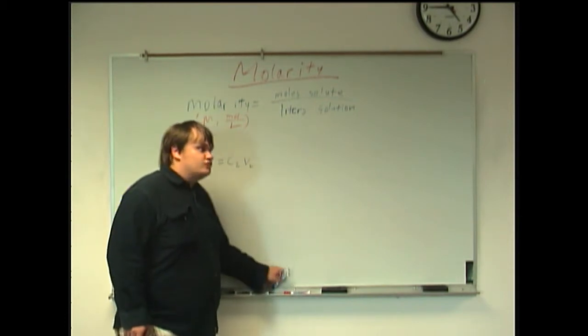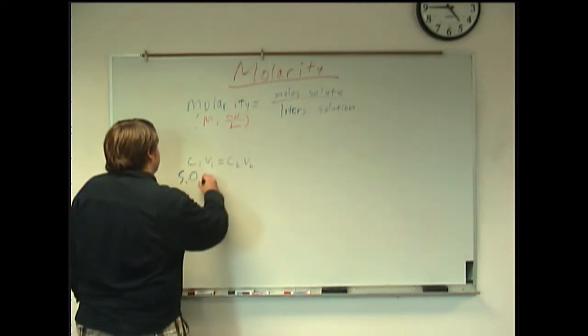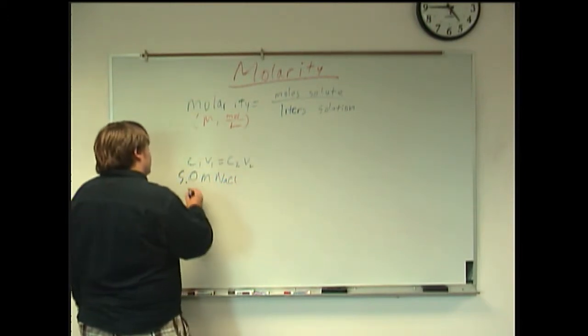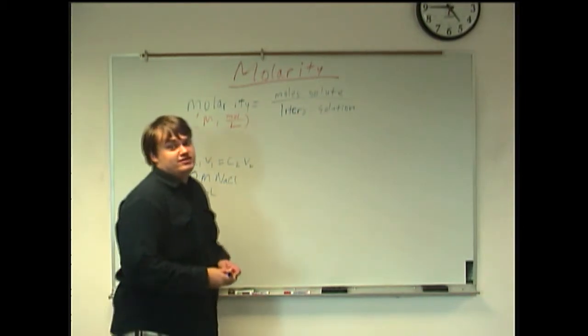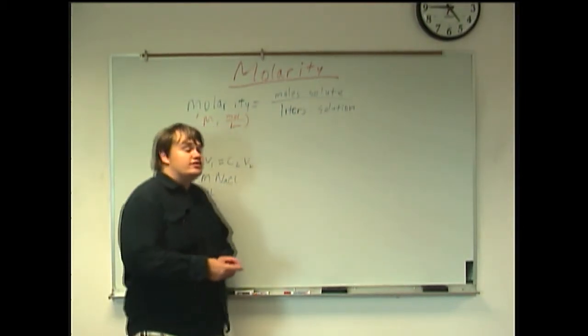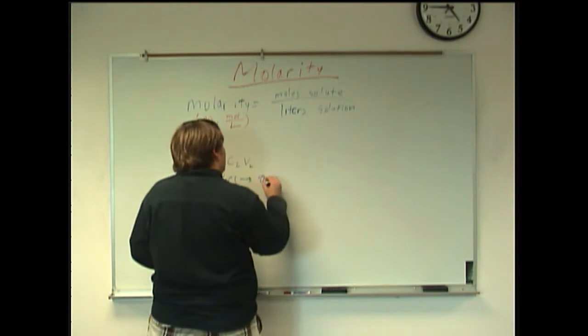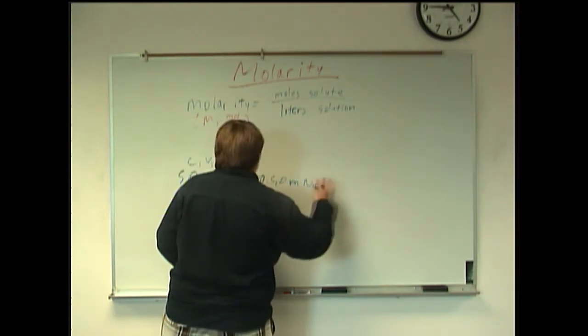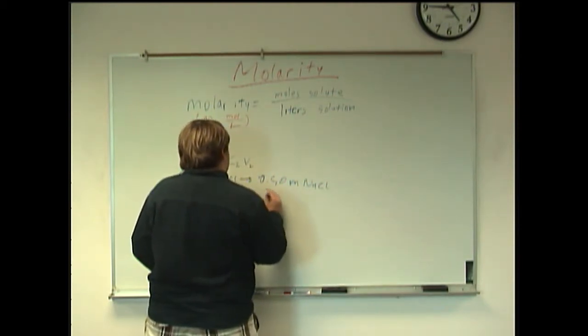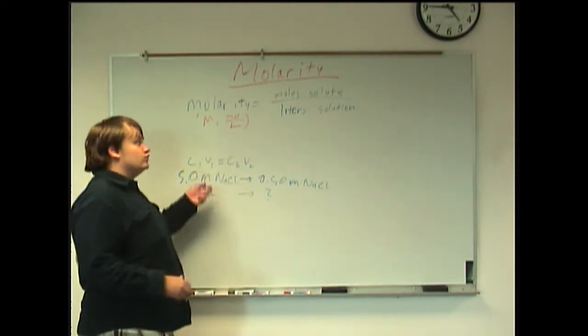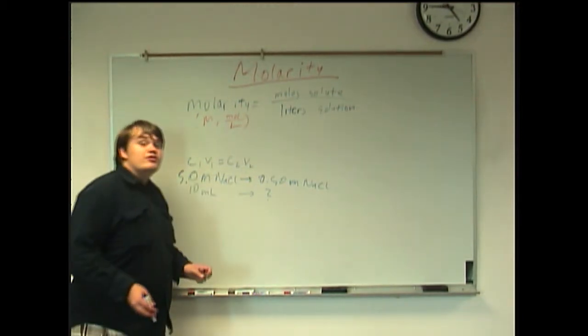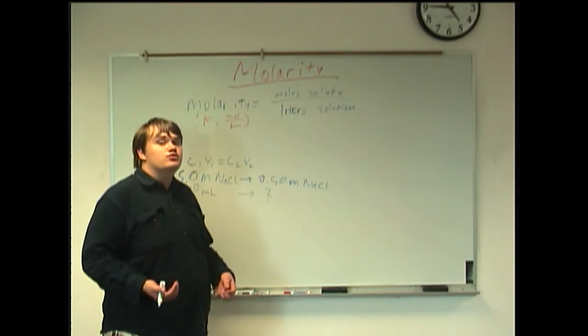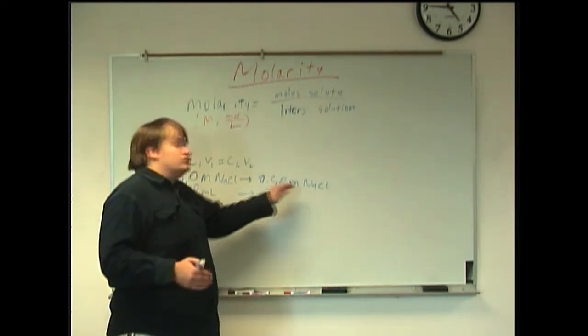Say you have 5 molar sodium chloride solution, and you have 10 milliliters of that. But say that's a little too strong, and you want to dilute it down to 0.5 molar NaCl solution. In this case, you want to use this equation to find out what volume of water you might want to add to it in order to dilute it to this concentration.